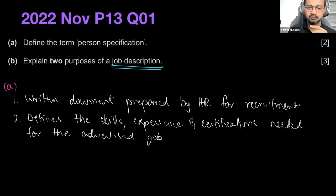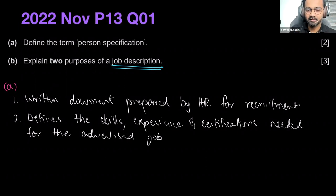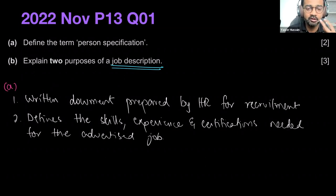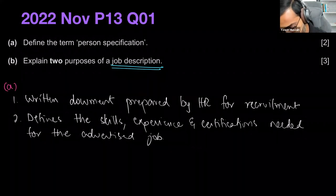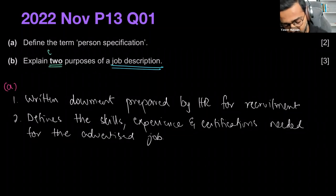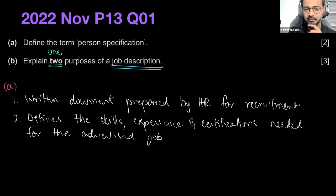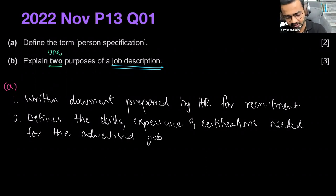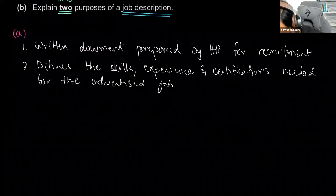One more thing: there's been a change in the syllabus and they've tweaked the way they word questions going forward in paper one. In the specimen paper they've shared, instead of asking for two reasons or two purposes, they've now started asking for one. When you see Part B of your questions, just make sure you look closely at whether it's asking for one or two. I'll mention two today so you're covered for both scenarios.